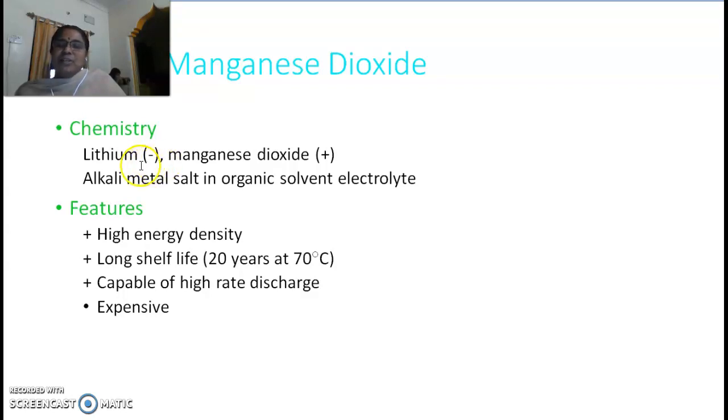Lithium easily loses electrons; those electrons are captured at MnO2. Overall it forms LiMnO2 because transfer of electrons from anode to cathode generates electricity. It must be dipped in an electrolyte solution.